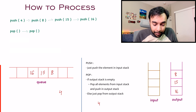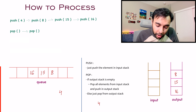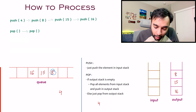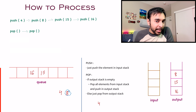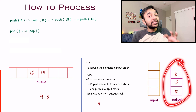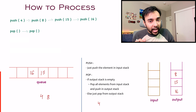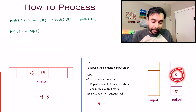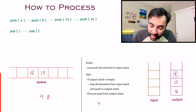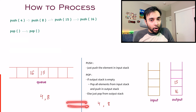Look at the next step. Once again I am calling the pop function. In your queue, 8 will get out — this is the expected operation. And in your stacks, what do you do? You look at your output stack. This time it is not empty, so you just pop out an element from it. When I pop out, I once again get 8. We were able to mimic the operation.